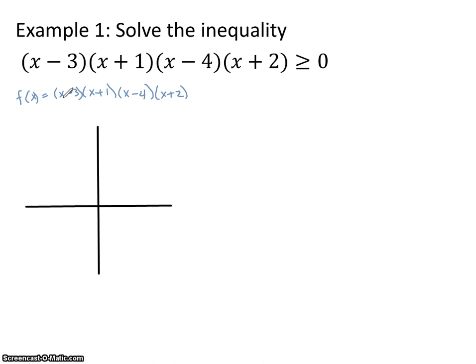And I'm going to know that I have one x-intercept at x equals 3, another x-intercept at negative 1, another x-intercept at 4, and my other x-intercept at negative 2.